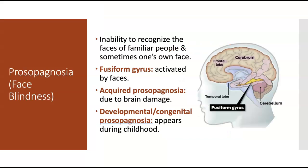The last factor is neurology — specifically how the activity and structures within our brain influence our perception, and how things going wrong in those areas affects perception. There are a couple of perceptual disorders to discuss. The first is prosopagnosia, also known as face blindness — an inability to recognize the faces of familiar people, and sometimes one's own face. Some people might have difficulty recognizing both others' faces and their own, while in some cases they can recognize others but not themselves, or vice versa.